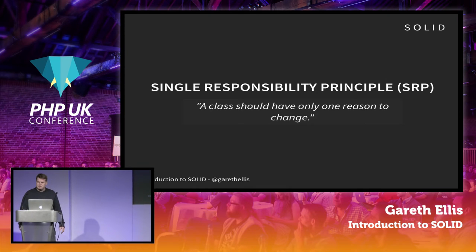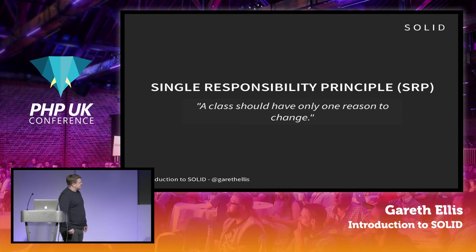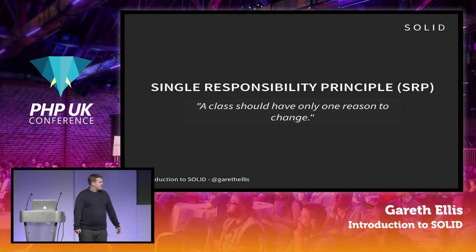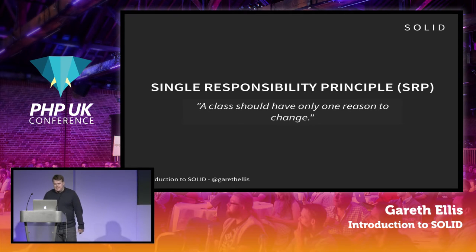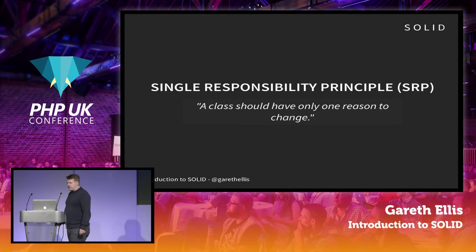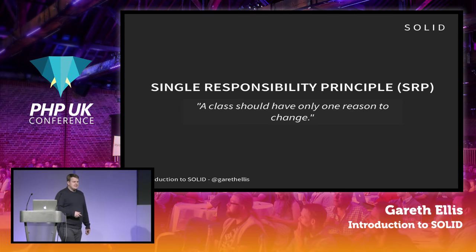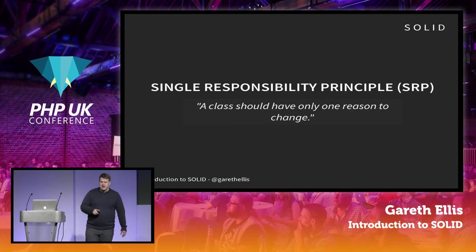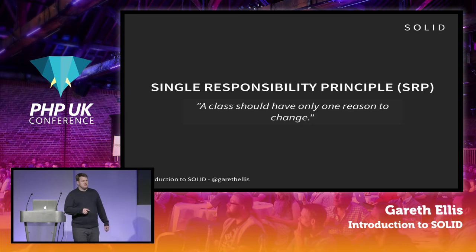On to the five principles. The first is the S — the Single Responsibility Principle, or SRP. SRP states that a class should have a single, well-defined purpose. Or more specifically, it has one reason to change. A reason to change is something which can possibly drive a change somewhere in your code.